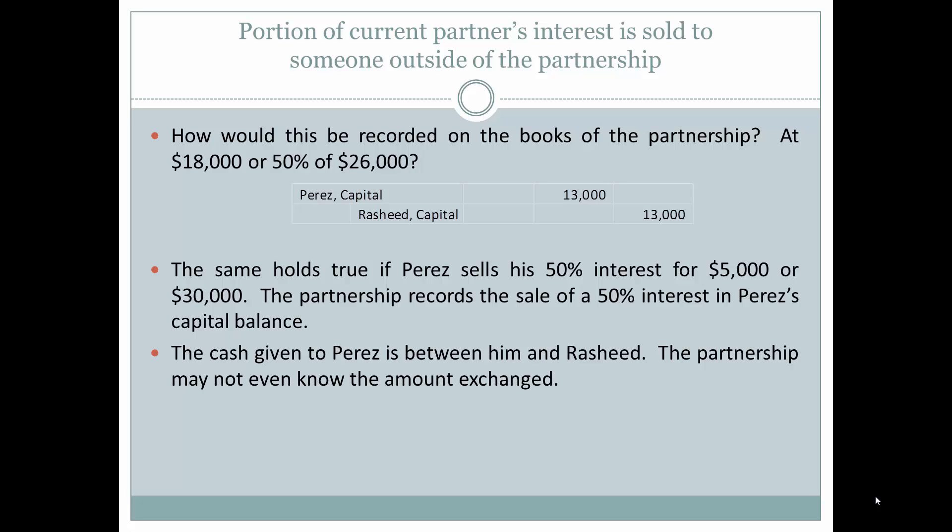This same journal entry holds true whether Perez sells his 50% interest for $5,000 or $30,000. The partnership records 50% of Perez's capital balance as the portion belonging to Rashid. The cash given to Perez is between him and Rashid — the partnership may not even know the amount exchanged. Rashid is not necessarily admitted into the partnership unless the other partners agree to accept him.